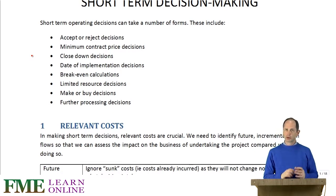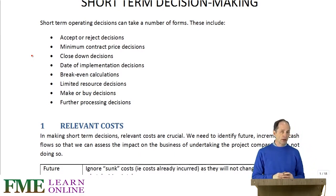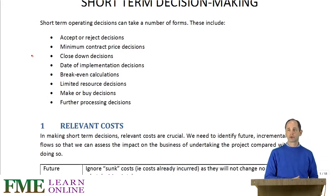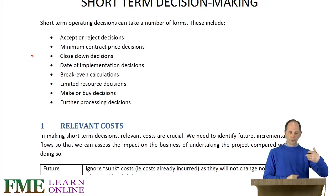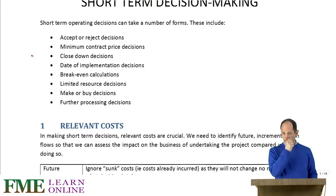It might be looking more closely at how much we need to produce to break even, or what to do if we have limited resources like labour hours or kilograms of material. Whether to make the items in-house or to buy them in and outsource production. And whether to process items further — either sell them in a slightly more raw state or spend some more money refining them to potentially get more money by selling them in a more refined state.